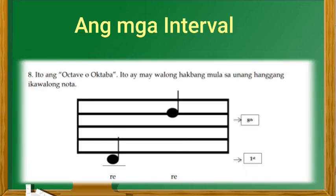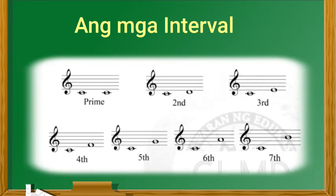At ang pangwalo, ay ang tinatawag na octave o octaba. Ito ay may walong hakbang mula sa unang hanggang ikalimang nota. Kung titignan natin ang mga interval, ito ay makikilala batay sa kinalalagyan o posisyon nito sa staff o limbguhit.